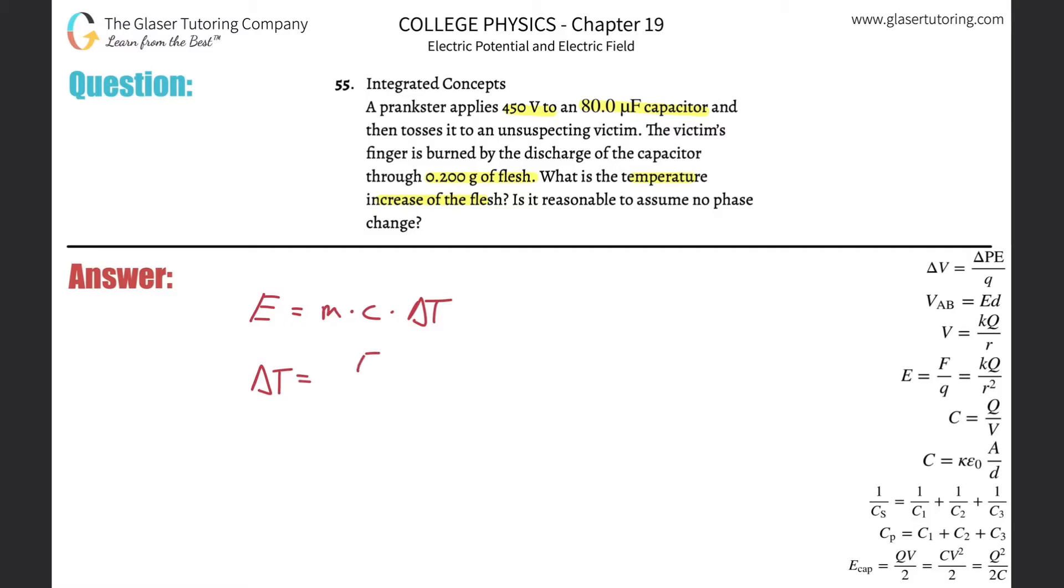So basically divide the mass and the specific heat out of both sides. And what we realize here is that we need to know the energy that was basically transferred, and we have to take that energy and divide it by the mass of whatever material we're heating up. In this case, I guess it's flesh. Sounds delicious. And then multiplied by the specific heat of flesh.